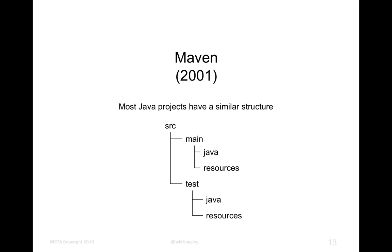The very good idea in Maven was that most Java projects have a pretty similar structure. They tend to have a source directory divided into two parts: main and test. Main includes Java files in a java subdirectory and non-Java files like config files and images in a resources directory. There are also unit tests in the test subdirectory, with java and resources subdirectories.